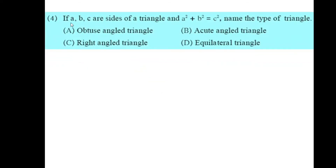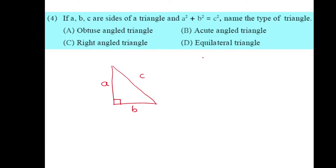Next question: if A, B, C are sides of a triangle and A squared plus B squared equals C squared, name the type of triangle. If the square of one side equals the sum of squares of the remaining two sides, that must be a right angle triangle. So the correct alternative is option C — a right angle triangle.